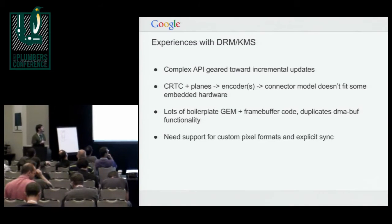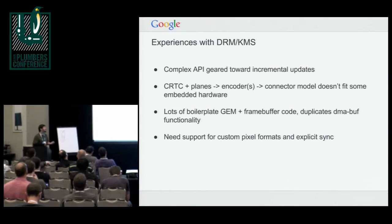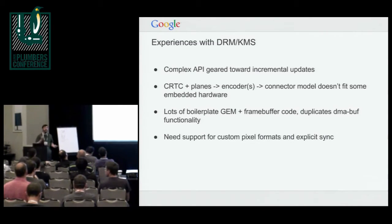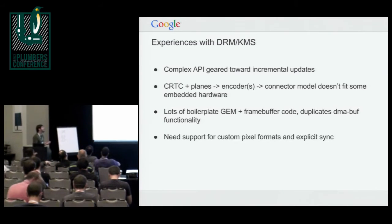We also found that there was a lot of boilerplate code we had to write around things like GEM and frame buffer management, which wouldn't be a big deal, except a lot of stuff is already handled within DMA buf — it already has its own reference counting and sharing semantics — and so even with the prime helpers, we felt like we were writing a lot of boilerplate code.